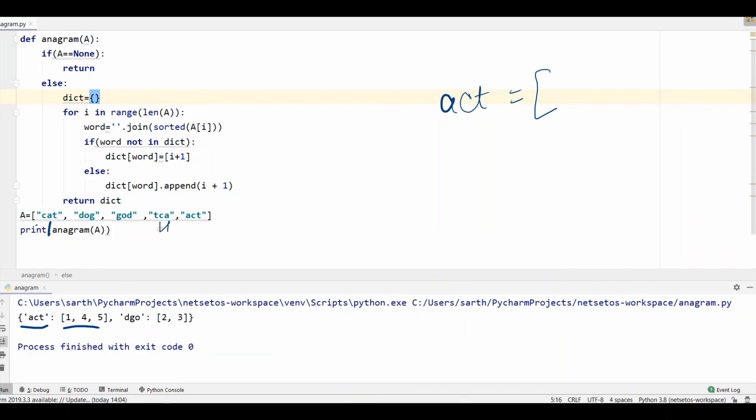1, 4 and 5. So, it is an array form. And for DGO, we got 2 and 3. So, second, third index. So, this is how we can take out the index of anagram words.